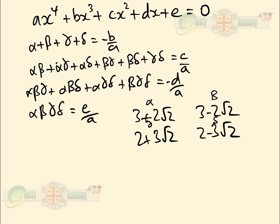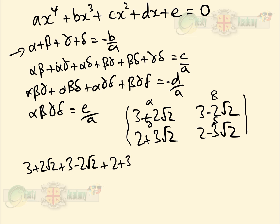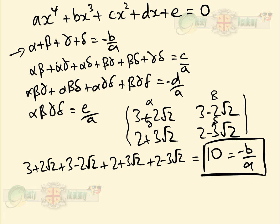Adding the four roots: (3+2√2) + (3-2√2) + (2+3√2) + (2-3√2) — all the √2 terms cancel — equals 10. So -b/a = 10, giving us our first coefficient.